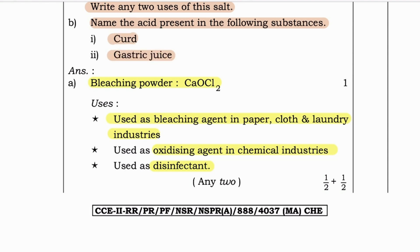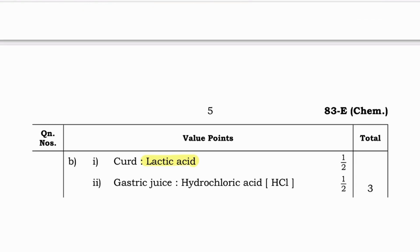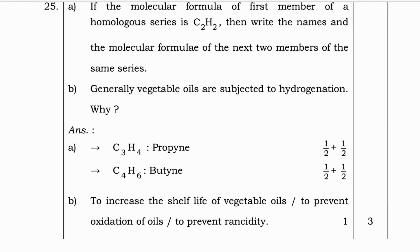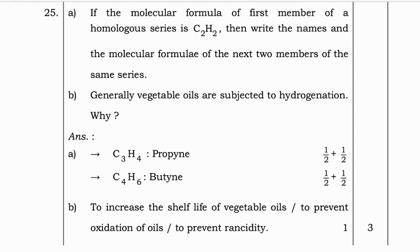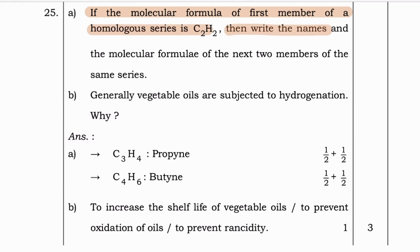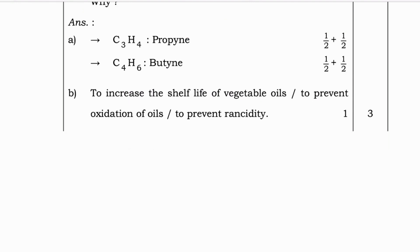Next: Name the acid present in the following substances — curd and gastric juice. In curd you find lactic acid, and in gastric juice you find hydrochloric acid (HCl). If the molecular formula of the first member of a homologous series is C2H2, write the names and molecular formulas of the next two members: C3H4 (propyne) and C4H6 (butyne).